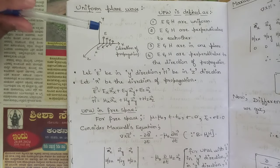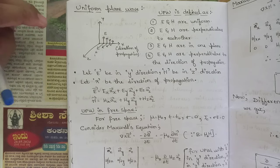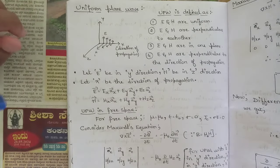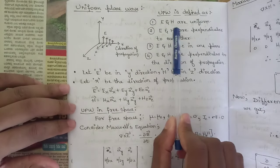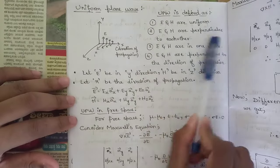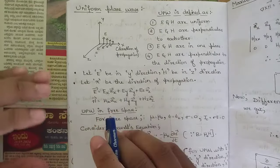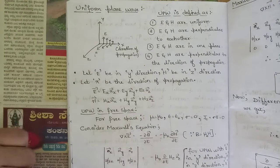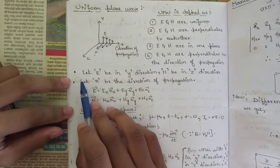Welcome to this new session. We are going to continue with module 5 and discuss the concept of uniform plane wave — the movement of electric field intensity and magnetic field intensity uniformly distributed along the surface, and the relationship between them. Uniform plane wave is defined by four points: first, E and H are uniform in nature; second, E and H are perpendicular to each other; third, E and H are in one single plane; fourth, E and H are perpendicular to the direction of propagation.